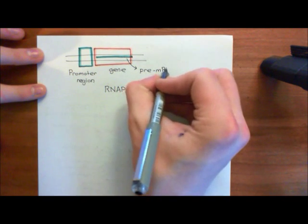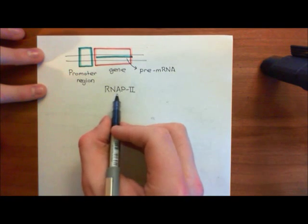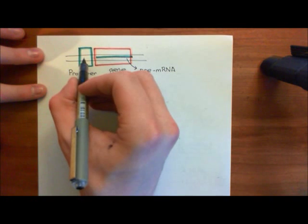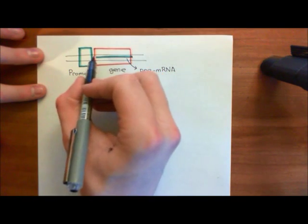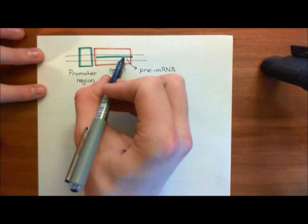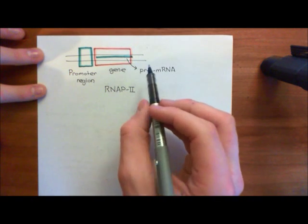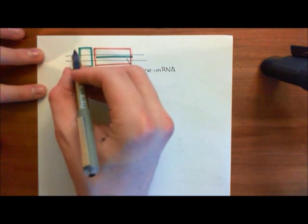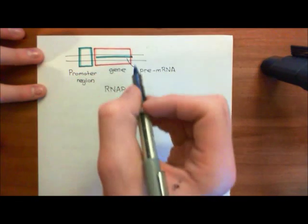If that promoter region has a very high affinity for binding to RNA polymerase 2, then RNA polymerase 2 will bind there all the time. You'll get mRNA being produced for the downstream gene all the time, and therefore you will get a larger production of the protein. This is how the promoter region controls the expression level of the downstream gene.